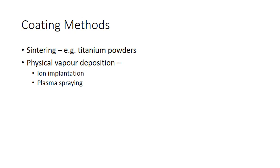Regarding how these coatings are applied: in the case of metal powders, sintering could be an option, as discussed in a previous video. The powder particles are heated to just below their melting temperature so they fuse together and fuse to the device, giving a rough surface finish. Cells prefer a rough surface finish and will integrate more readily to a rough surface than a smooth surface.